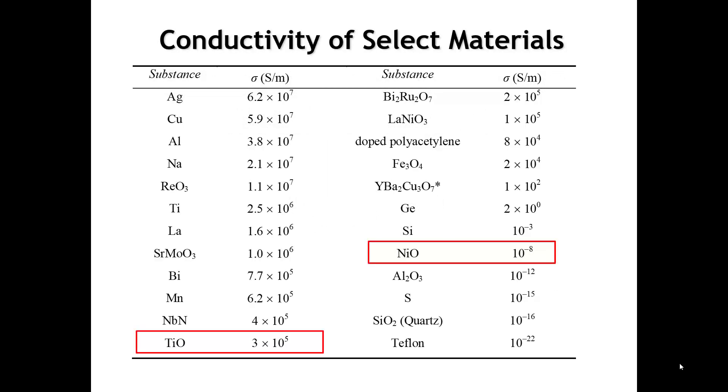We're going back to our table of conductivities of select materials. If you remember from a couple of lectures back, I pointed out that nickel oxide and titanium oxide both take the rock salt structure and both have partially filled orbitals.